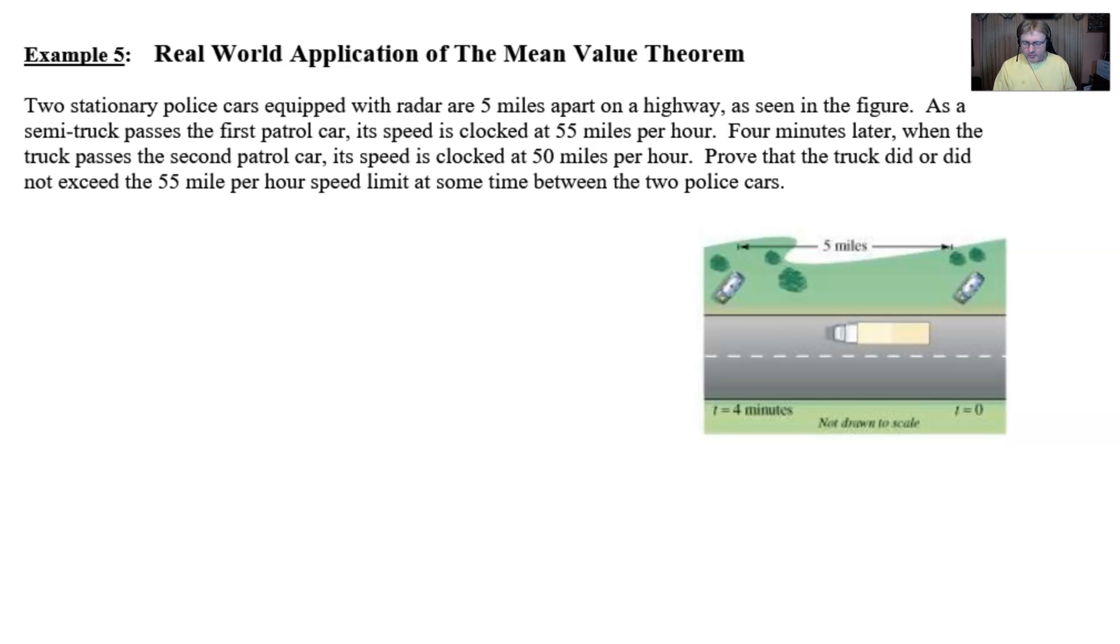Okay, here we go. We've got a real world application of the mean value theorem right here, something that I think most of you can relate to as you're now of the age that you're starting to drive. Two stationary police cars equipped with radar are five miles apart on a highway, as seen in the figure. As a semi-truck passes the first patrol car, the speed is clocked at 55 miles per hour.